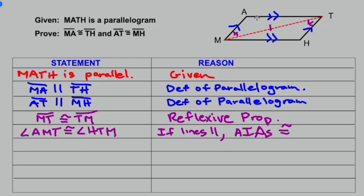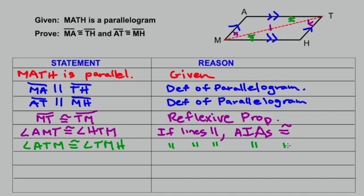Also, if we use the top and bottom sides with M-T as a transversal, the angle A-T-M and the angle T-M-H would also be considered alternate interior angles. For the same reason that those two sides are parallel, angle A-T-M is congruent to angle T-M-H — if lines are parallel, alternate interior angles are congruent. At this point we have enough to prove our triangles are congruent. We've got two angles in each triangle and the side in between them, so it's going to be angle-side-angle congruence.